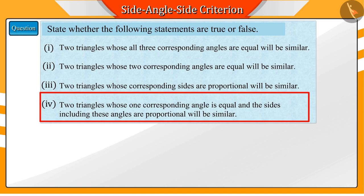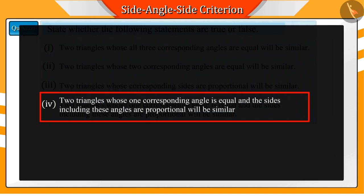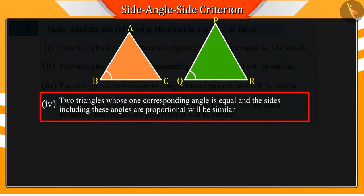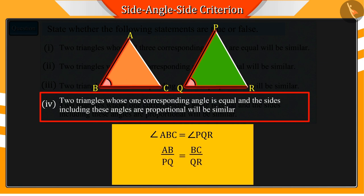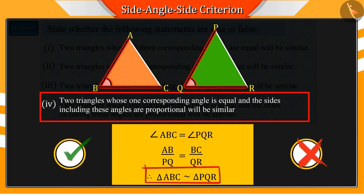What can you say about the fourth statement? In this statement, it is said that any two triangles whose one corresponding angle is equal and the sides including these angles are proportional will be similar. Whether it's true or not, we will find this by looking at an example.